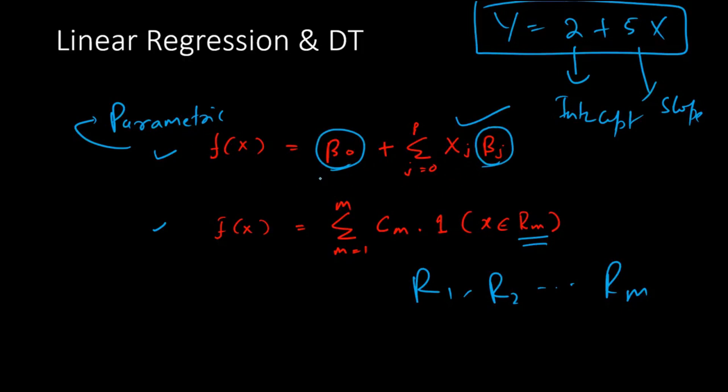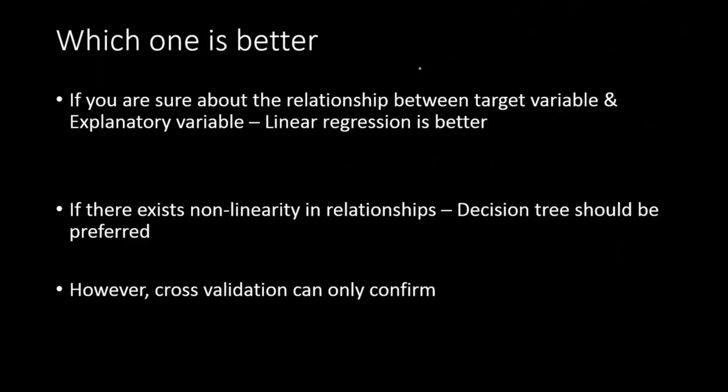Unlike in linear regression which gives us parameters, we normally do not have parameters in decision tree. Although loosely we can say the number of segments or number of terminal nodes could be considered as some sort of a parameter, but theoretically it is not the case. So given that we have some understanding of the theory or difference in the theory of decision tree and linear regression, let us understand which one is better.